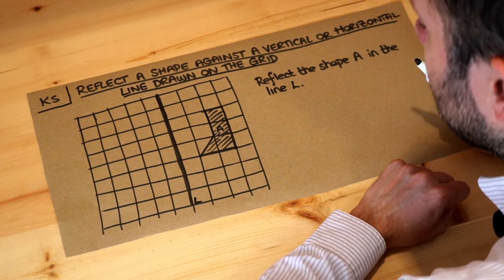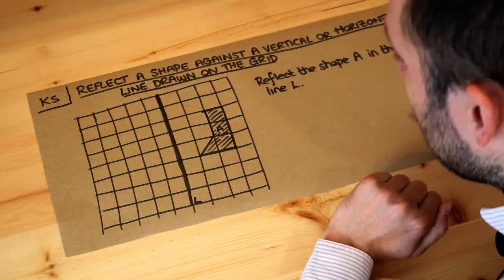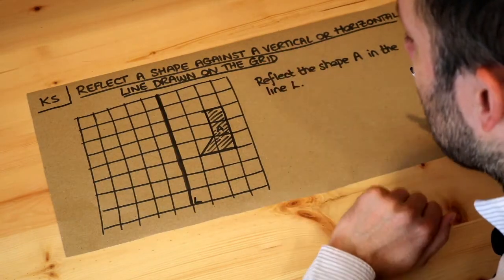Now what it means to reflect a shape is to kind of flip it over in some kind of mirror line, some reflection line.